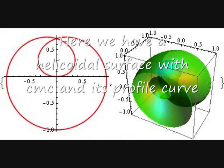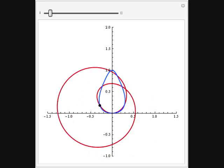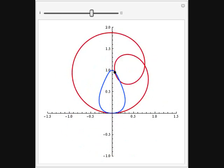Here we have a helicoidal surface with constant mean curvature and its profile curve. The blue curve is a heart-shaped curve. We can see how the profile curve produces the blue curve.